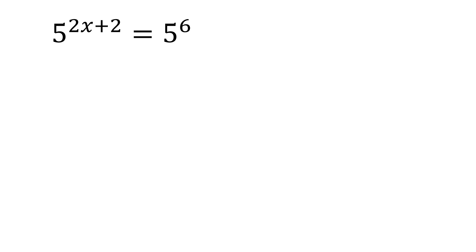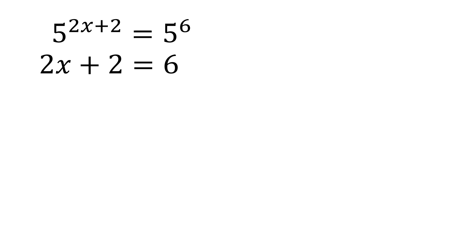The 5 is what you call the base, and the 2x plus 2 and also the 6 are what you call exponents. So if the bases are the same — as you can see in the given, it's the same 5 — you can just equate the exponents and remove the bases. So 2x plus 2 equals 6, because the bases are the same. What you're after is to make the exponents the same.